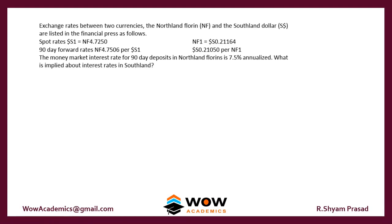The next question is similar but asks for a 90-day forward rate. Here, instead of dividing by 2, take the interest rate proportionally as 90/360. That gives a proportionate interest, and then you calculate the forward rate in the same way. You can try this one on your own.